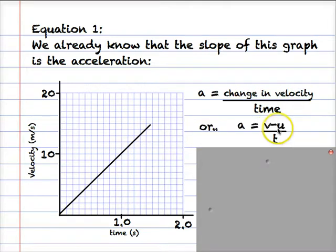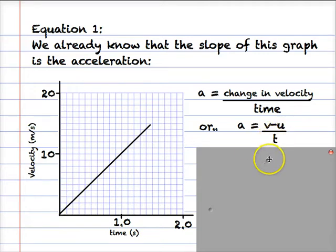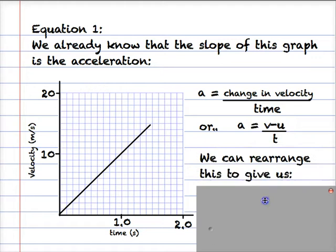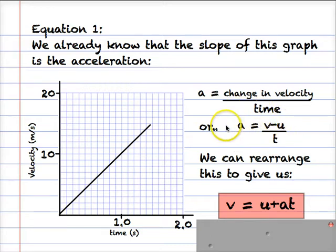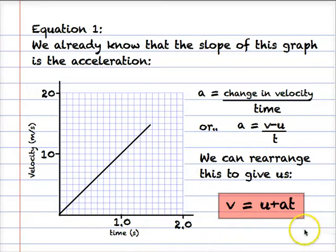The change in velocity is the final velocity minus the initial velocity — that's often zero — divided by the time it took. In symbols we have a = (v - u) / t. We can rearrange that by multiplying both sides by t and then moving u to the other side, so we end up with v = u + at. That's the first equation of motion.